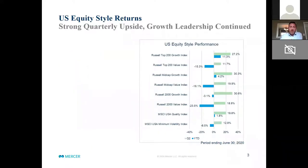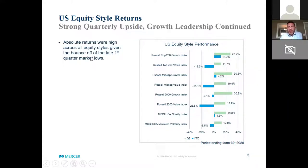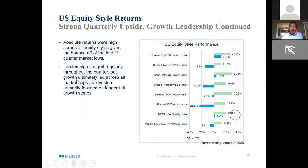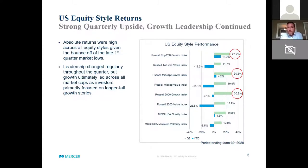Overall, everything was up sharply in the second quarter. We certainly saw the growth leadership that we saw in the first quarter and 2019 continue. Returns were high across all equity styles, but certainly highest for the growth pieces. When we look at the Russell Top 200 Growth, it was up close to 30 percent; mid cap and small cap as measured by the Russell 2000 indexes were up more than 30 percent. We saw that leadership change throughout the quarter — value ran at times — but ultimately growth led as investors focused on those longer-tail growth stories.